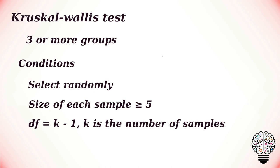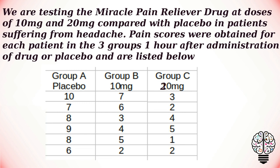Let us take a look at an example to understand Kruskal-Wallis test. We are testing the miracle pain reliever drug at doses of 10 mg and 20 mg compared with placebo in patients suffering from headache. Pain scores were obtained from each patient in the three groups, one hour after administration of drug or placebo and are listed below.